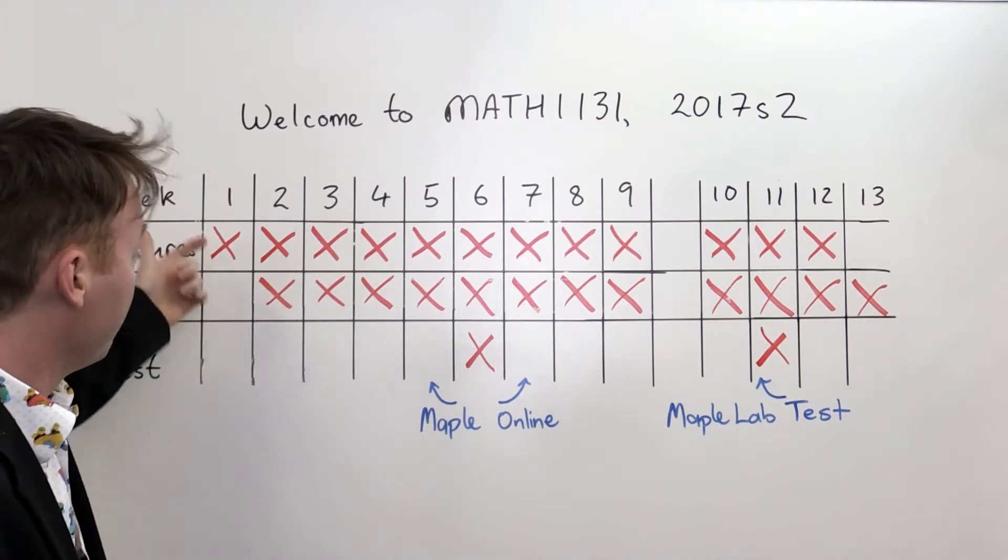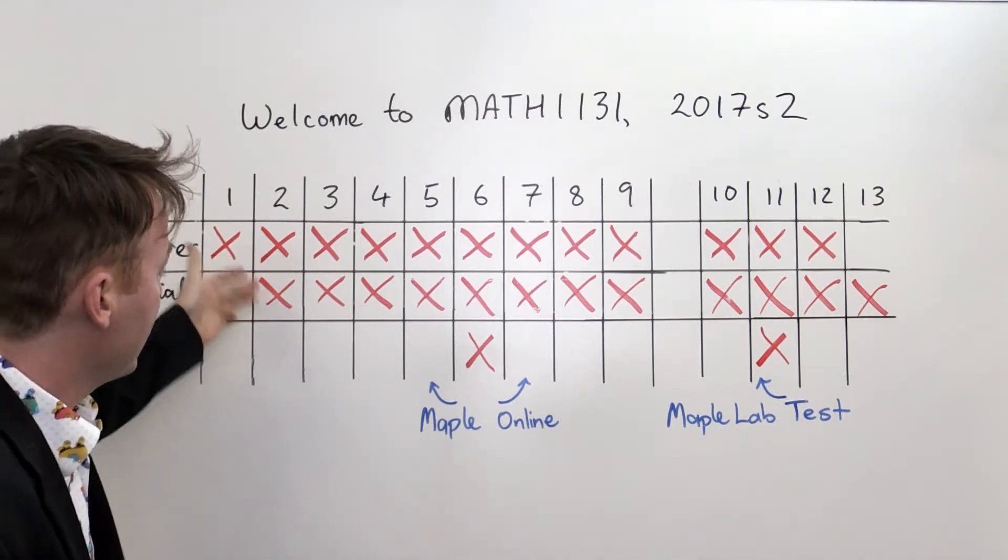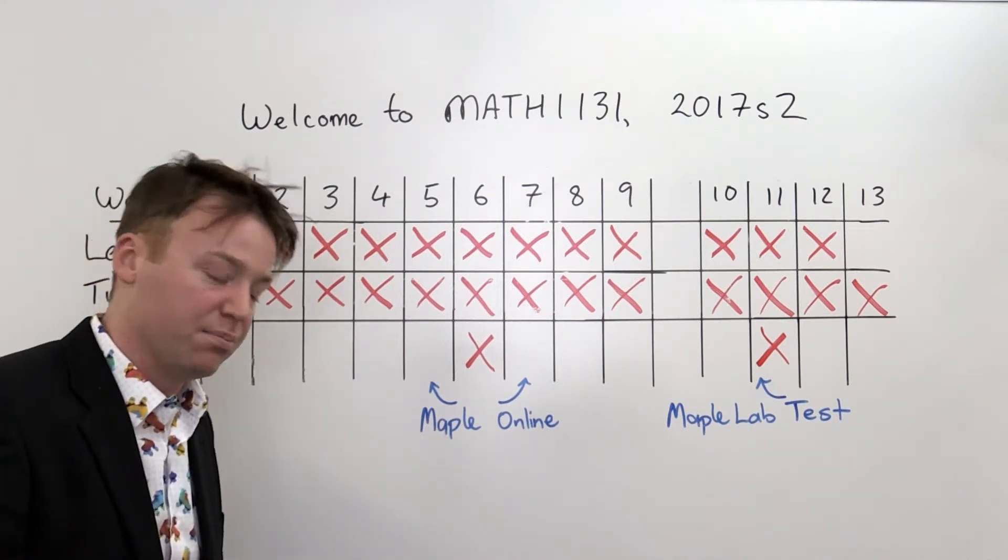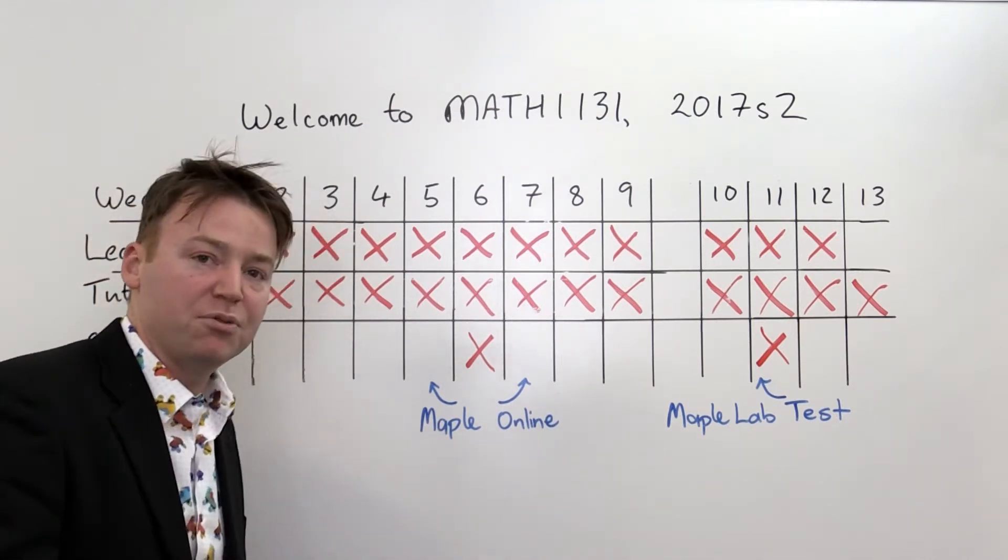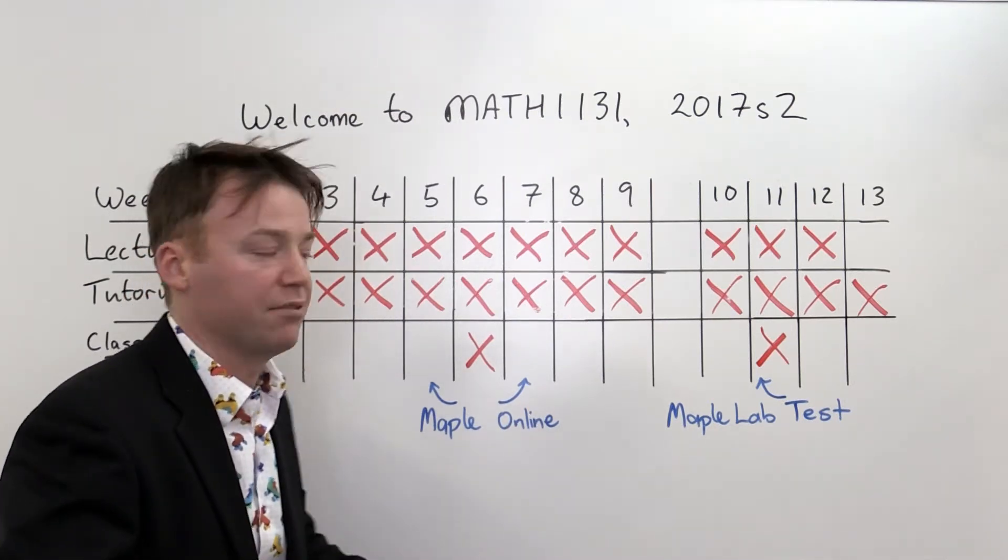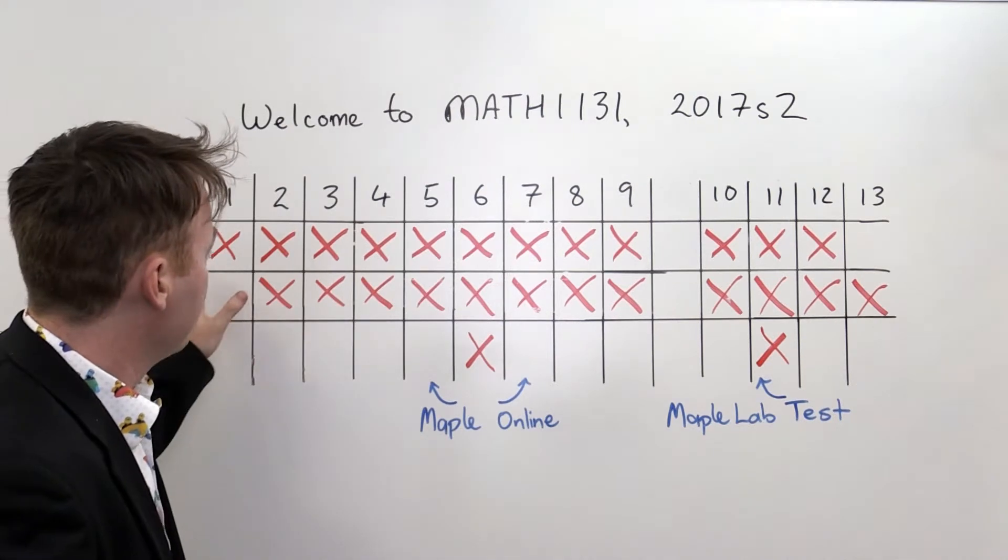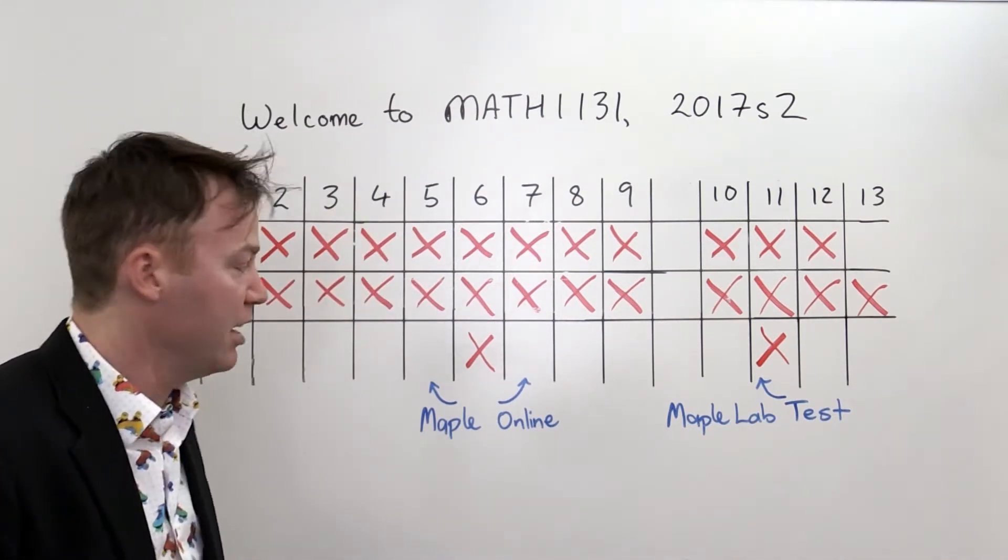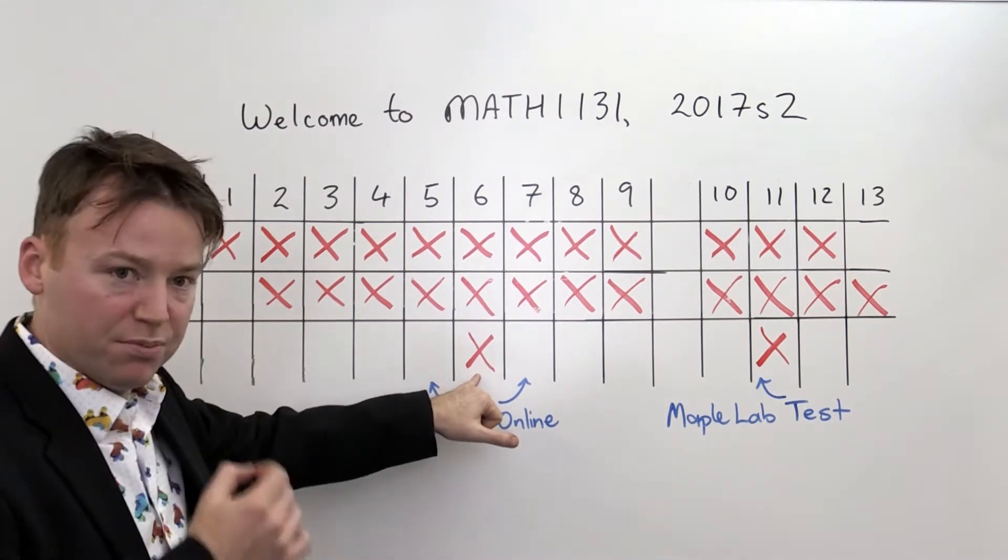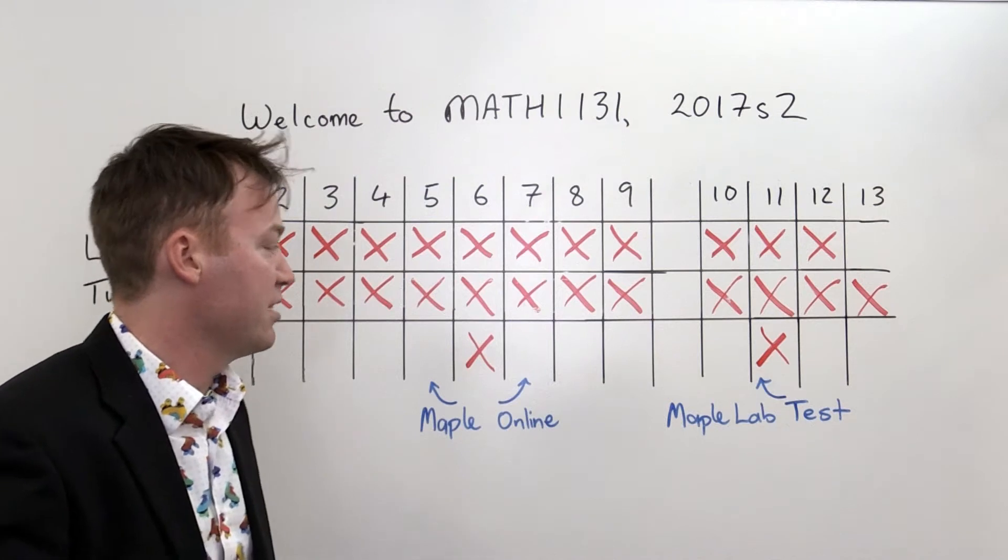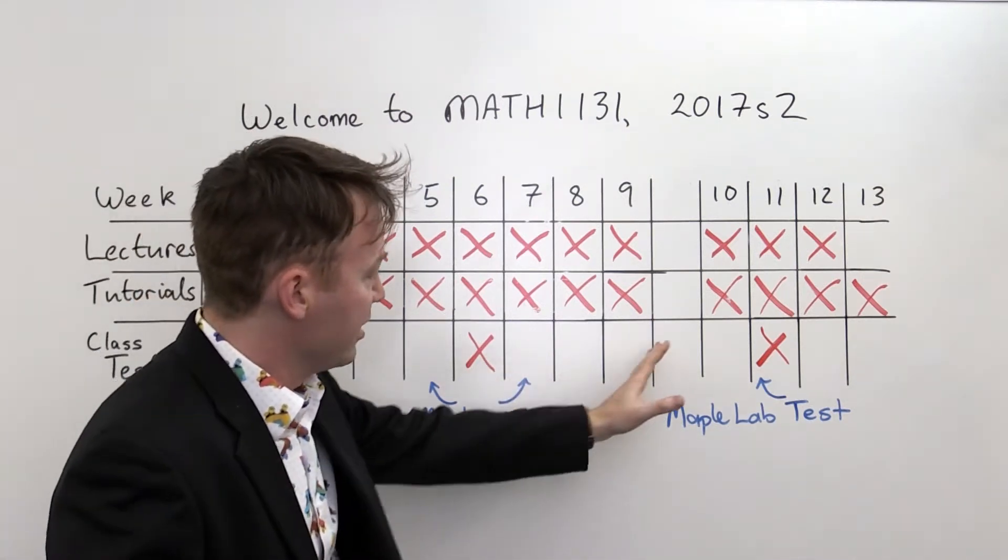From week two, there will be lectures and tutorials. Where your tutorial is precisely will be in your timetable, but it will be on either Monday, Tuesday, or Wednesday up until Wednesday afternoon. This will go on until week five. You have a Maple online test in week five, a classroom test in week six, and another Maple online test in week seven. Then you make it to the break.